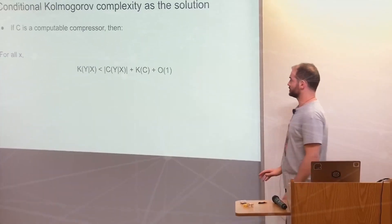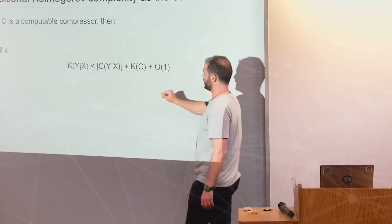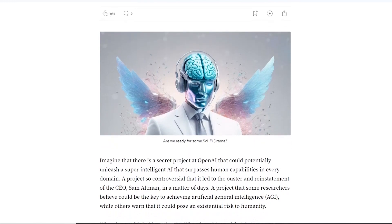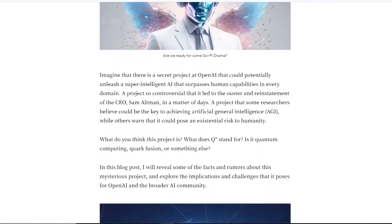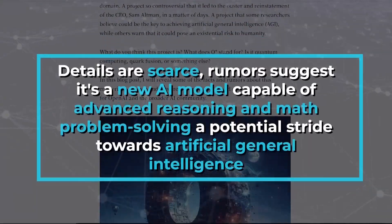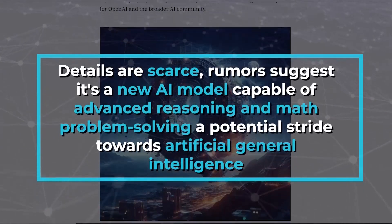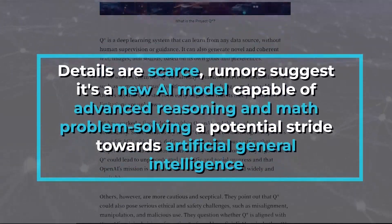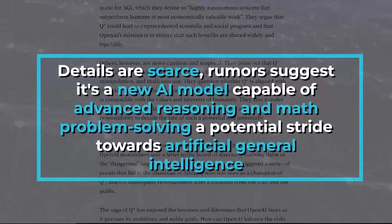Amidst these challenges, Tsutskever remains focused on advancing the field of AI. He's reportedly connected to Project Q-Star, a mysterious AI breakthrough shrouded in secrecy. Although details are scarce, rumors suggest it's a new AI model capable of advanced reasoning and math problem solving, a potential stride towards artificial general intelligence.